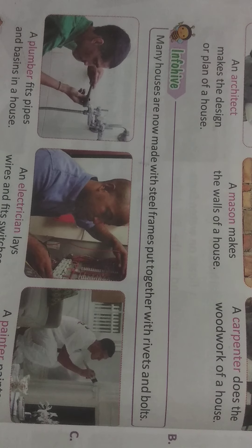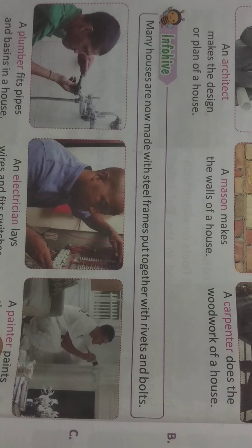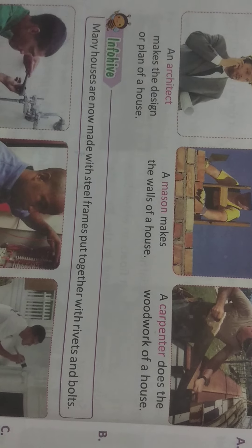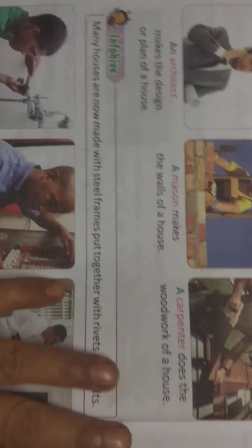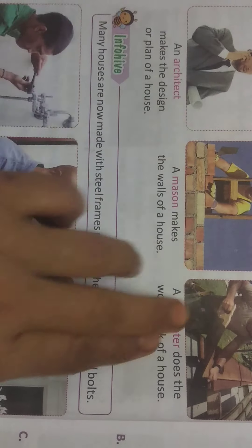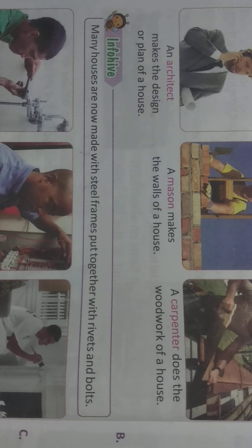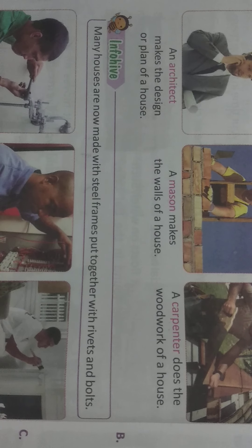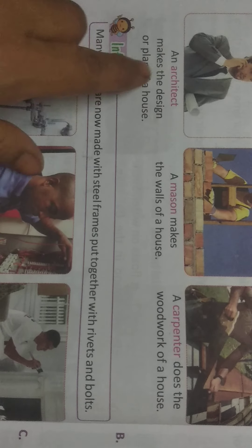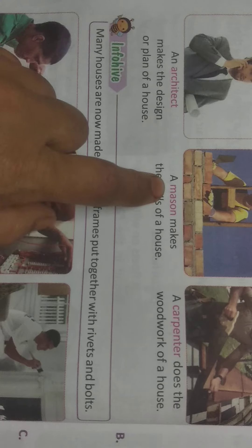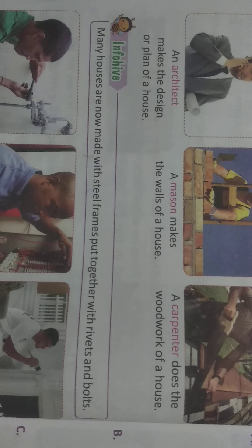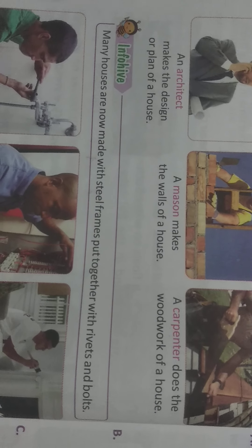This is the lesson. Children, read page number 50 and understand the topic. Understand the things that were taught and also learn the difficult words. In the next class, I will explain the assessment zone.